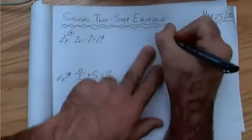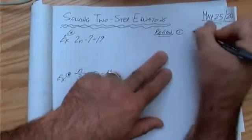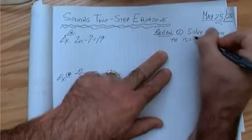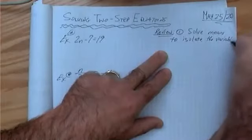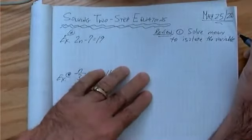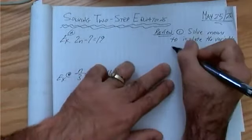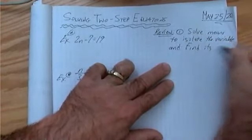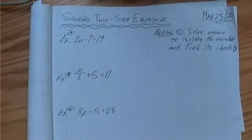So let's just review these ideas. Off to the side we're going to review. Number one, solve means to isolate the variable. I have Mrs. Newman here helping teach today. Solve means to isolate the variable and find its identity. So we're going to do our best to find out what the variable is.